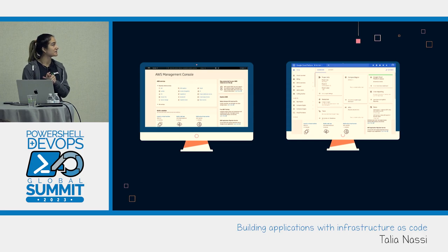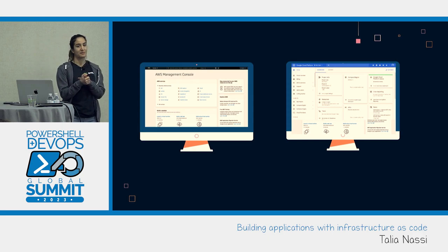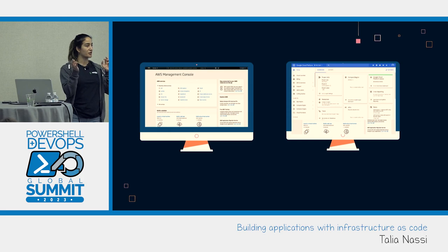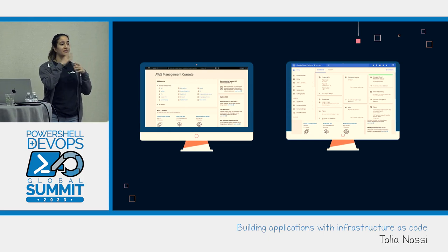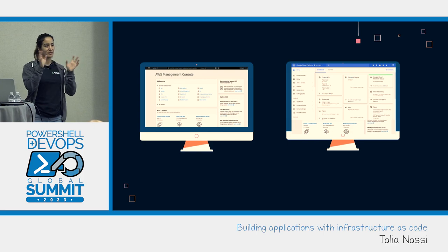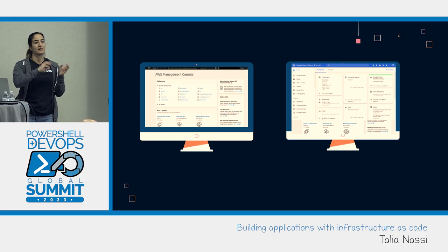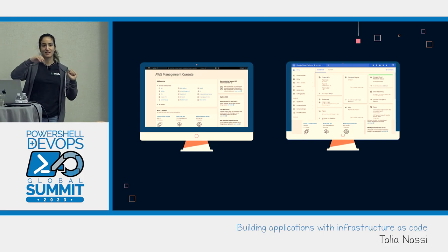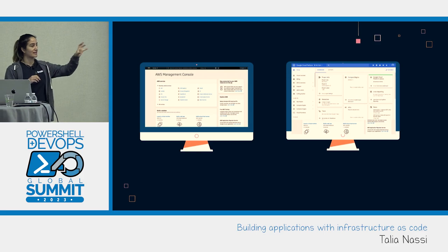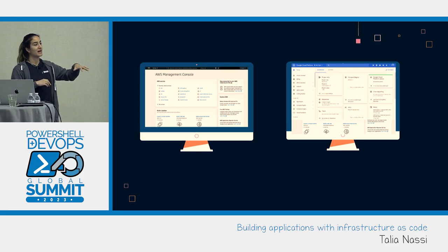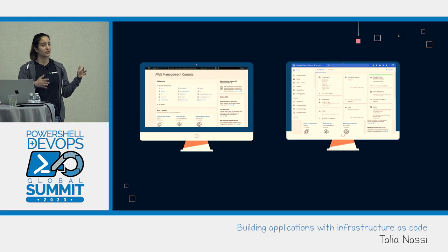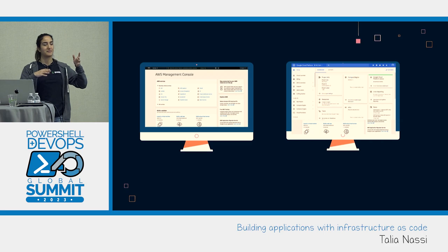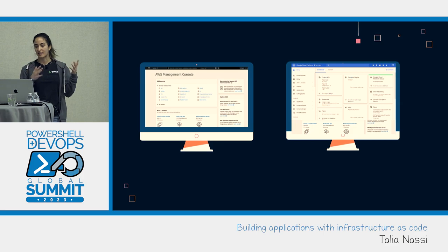Many times when developers start building applications, you usually start in your cloud provider's console. You'll go into the AWS management console or whatever cloud provider you use, and choose to create a Lambda function here, choose this resource, make this a destination for that Lambda function, create this database from the UI. Normally, especially when I first started in the cloud, the first thing you do is go to the UI and play around with it, because you have this graphical interface where you can see everything and how it's connected.